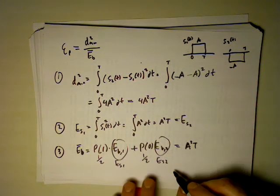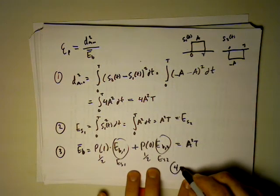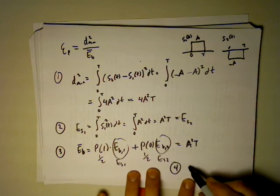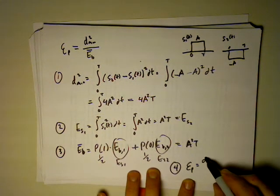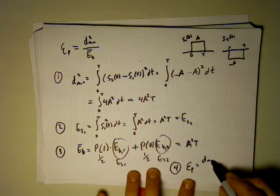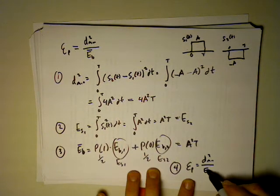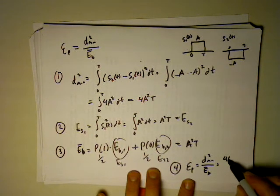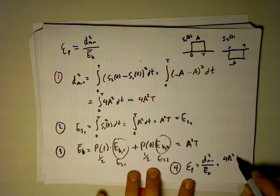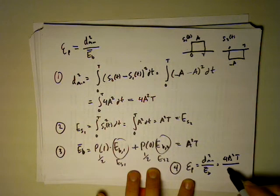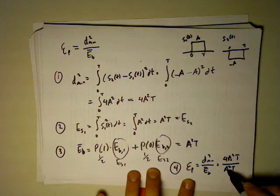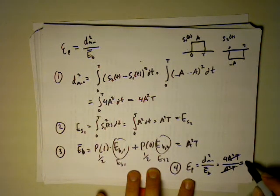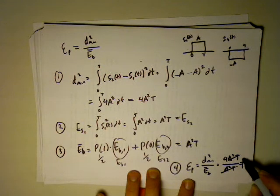Step 4: apply the expression for power efficiency. Epsilon_p = D_min² / E_B-bar = 4A²T / A²T. Those cancel, and we're left with 4.